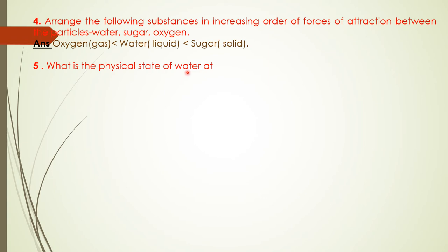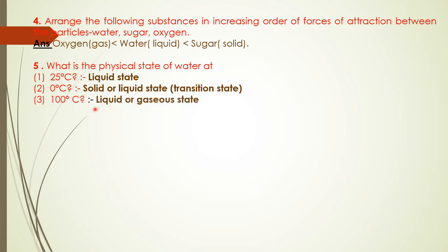Question 5: What is the physical state of water at these temperatures? First, 25 degrees Celsius—the physical state is liquid state. Second, 0 degrees Celsius—this is the melting point, the time to convert solid into liquid. Answer: solid or liquid state, that is transition state. The physical state is either solid or liquid. Third, 100 degrees Celsius—this is boiling point, the time to convert liquid into gaseous state. Answer: liquid or gaseous state. On that time, the physical state will be either liquid or gaseous.